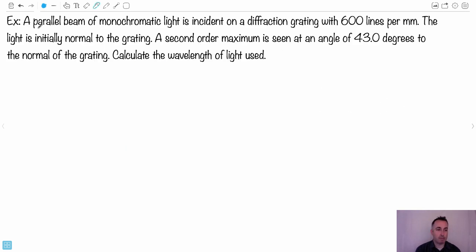Then we have a real question here. Parallel beam of monochromatic light, that means we can find lambda. That's the whole point of it. We're supposed to find lambda. And it's incident on a diffraction grating. So that means we have a situation like before, we have a whole bunch of different holes here. We need to find this D. We're going to need to know that diffraction grating. We know there's 600 lines per millimeter. Now the light's initially normal to the grating, which means it's this way over here. That's the way the light is.